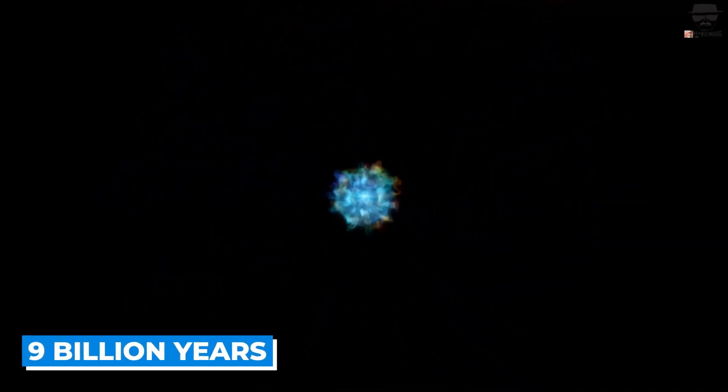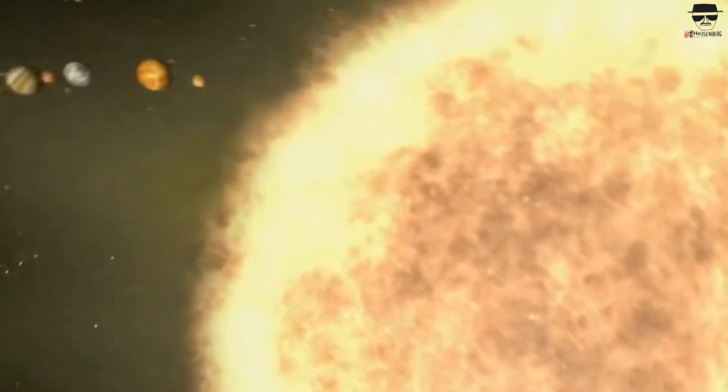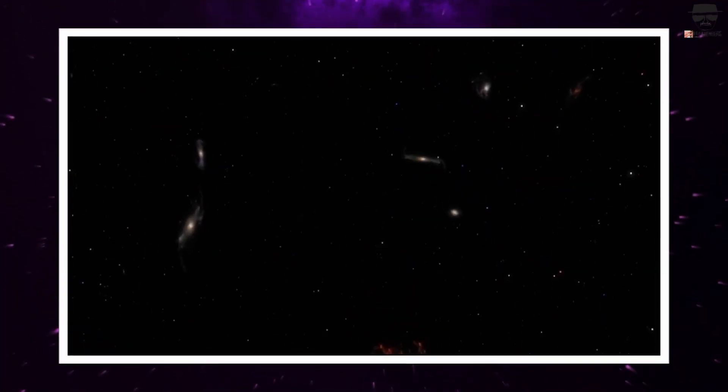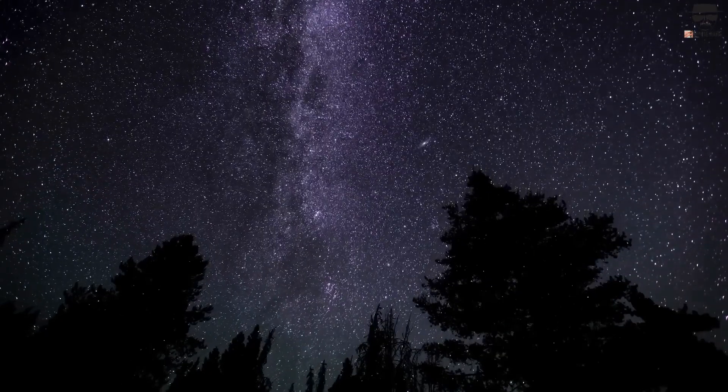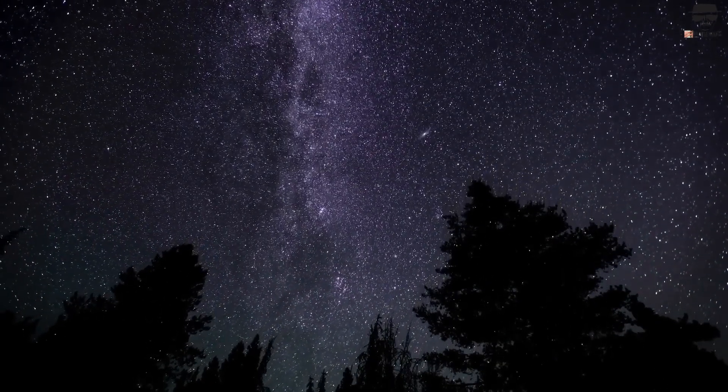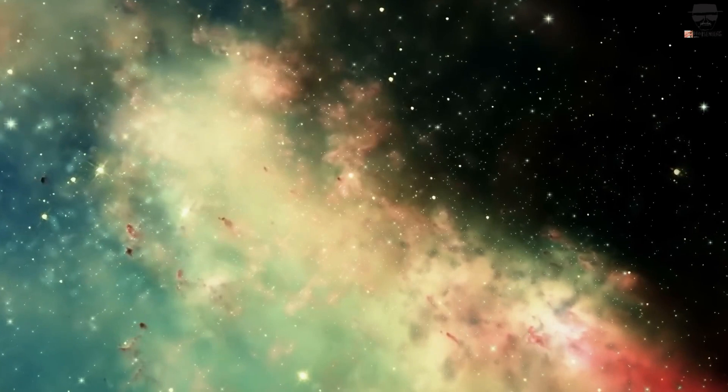Around 9 billion years after the Big Bang, our solar system came into existence. From then on, things got even more interesting as odd galaxies, which define 99.9% of our cosmological models, started popping up out of nowhere. These galaxies are so old that even dinosaurs couldn't have been around when they were formed.